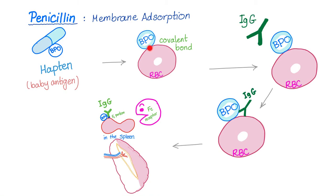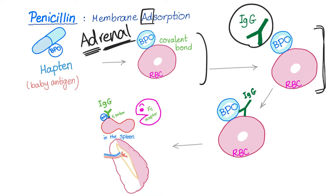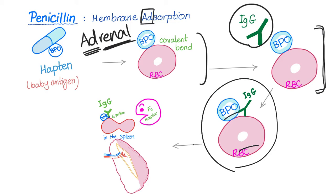This BPO group attaches to the red blood cell surface forming a covalent bond — this is called membrane adsorption. 'Ad' means attached to or pretty close, as in adrenal, which is the gland attached to the kidney. This will lead to IgG formation, because this doesn't seem familiar to your body — it seems like an enemy or a foreigner — which will lead to IgG attached to the BPO and the red blood cell. They go nicely to the spleen and get phagocytosed by the macrophage.